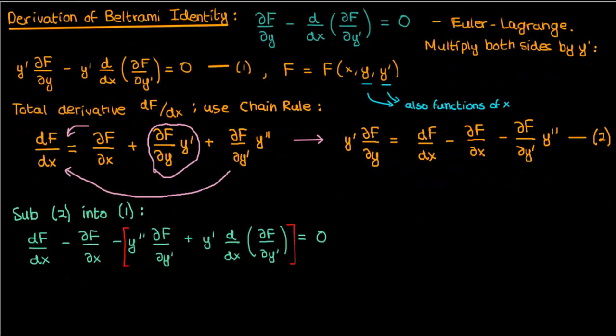I'm just going to take the negative common from the last two terms. Now this expression in the brackets can be simplified. Do you know how? I'll give you a hint, use the product rule. If you did use the reverse of the product rule, you'll realize that this expression in the brackets is just d/dx of y prime times partial F partial y prime.